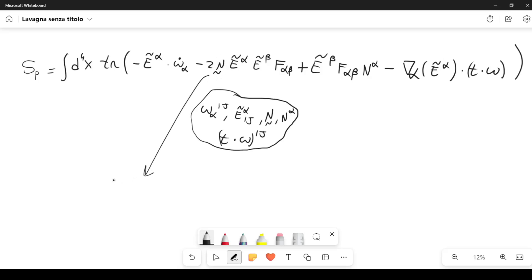Now, if we take the variation with respect to that parameter, we obtain the following equation. The trace of e tilde alpha, e tilde beta, f alpha beta equal to zero.